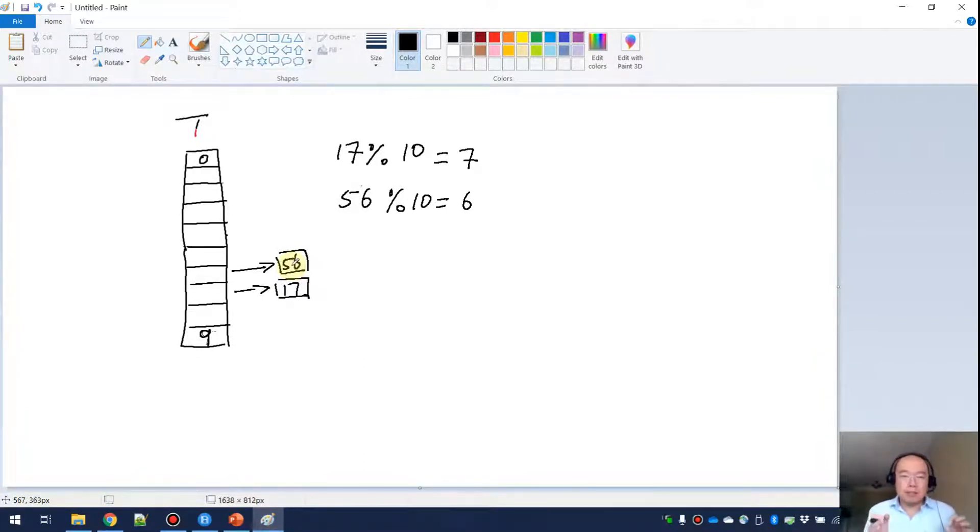So we are guaranteed to have the key, the hash function of the key, to be a value between 0 and M minus 1. I'm using square brackets because both 0 and M minus 1 are included in this range. That is the division method.